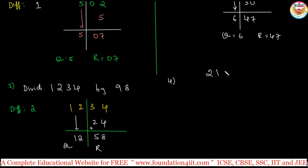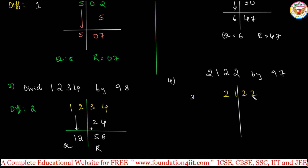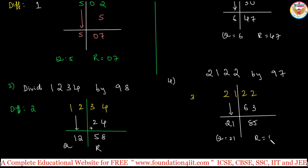Now take the example 2122 divided by 97. The difference is 3, since 100 minus 97 is 3. Write the number 2122 and keep a line so that the right side has 2 digits, because the base is 100. Bring 21 down, then 21 times 3 is 63. Add 22 plus 63, which is 85. The quotient is 21 and the remainder is 85.